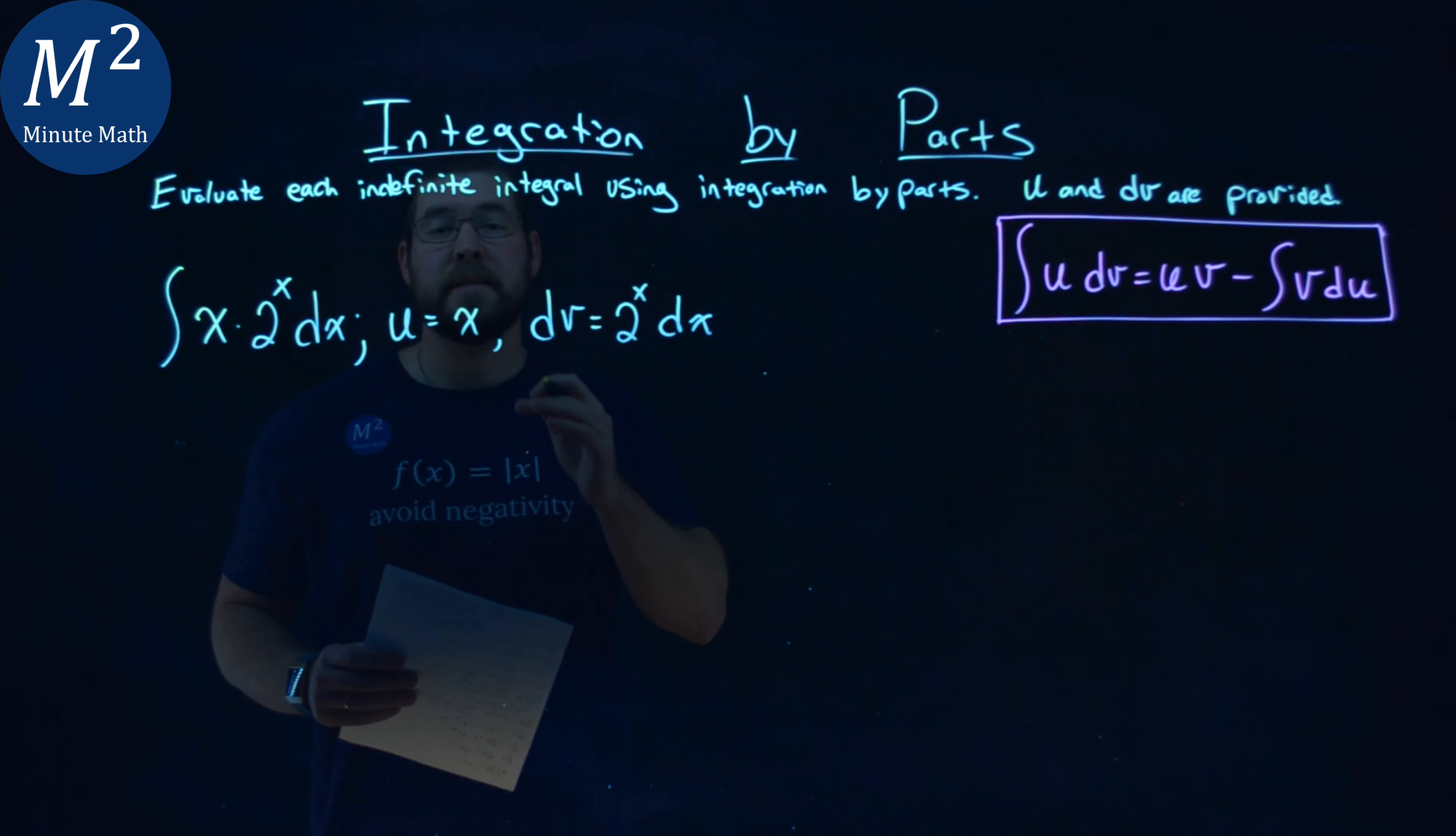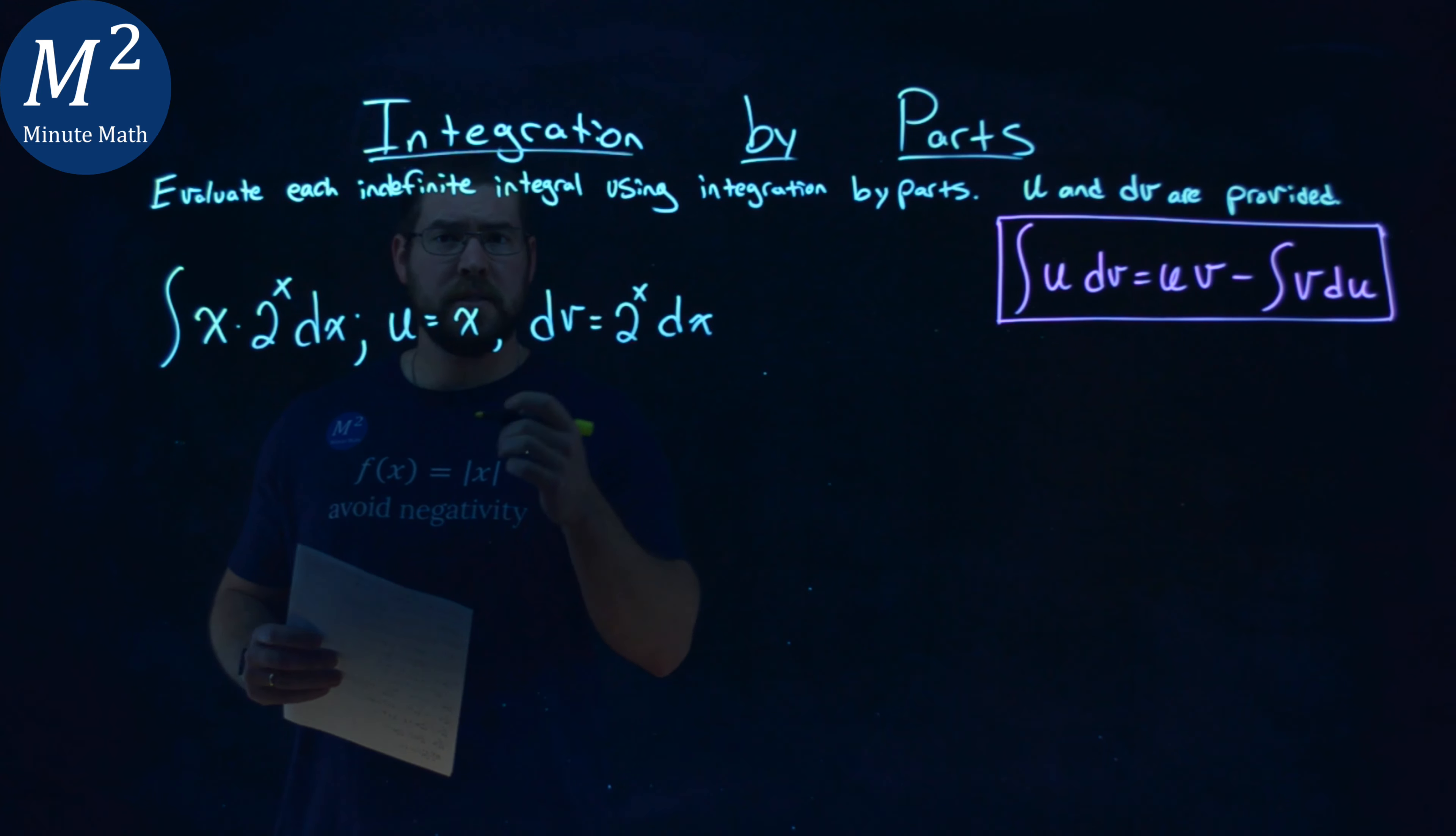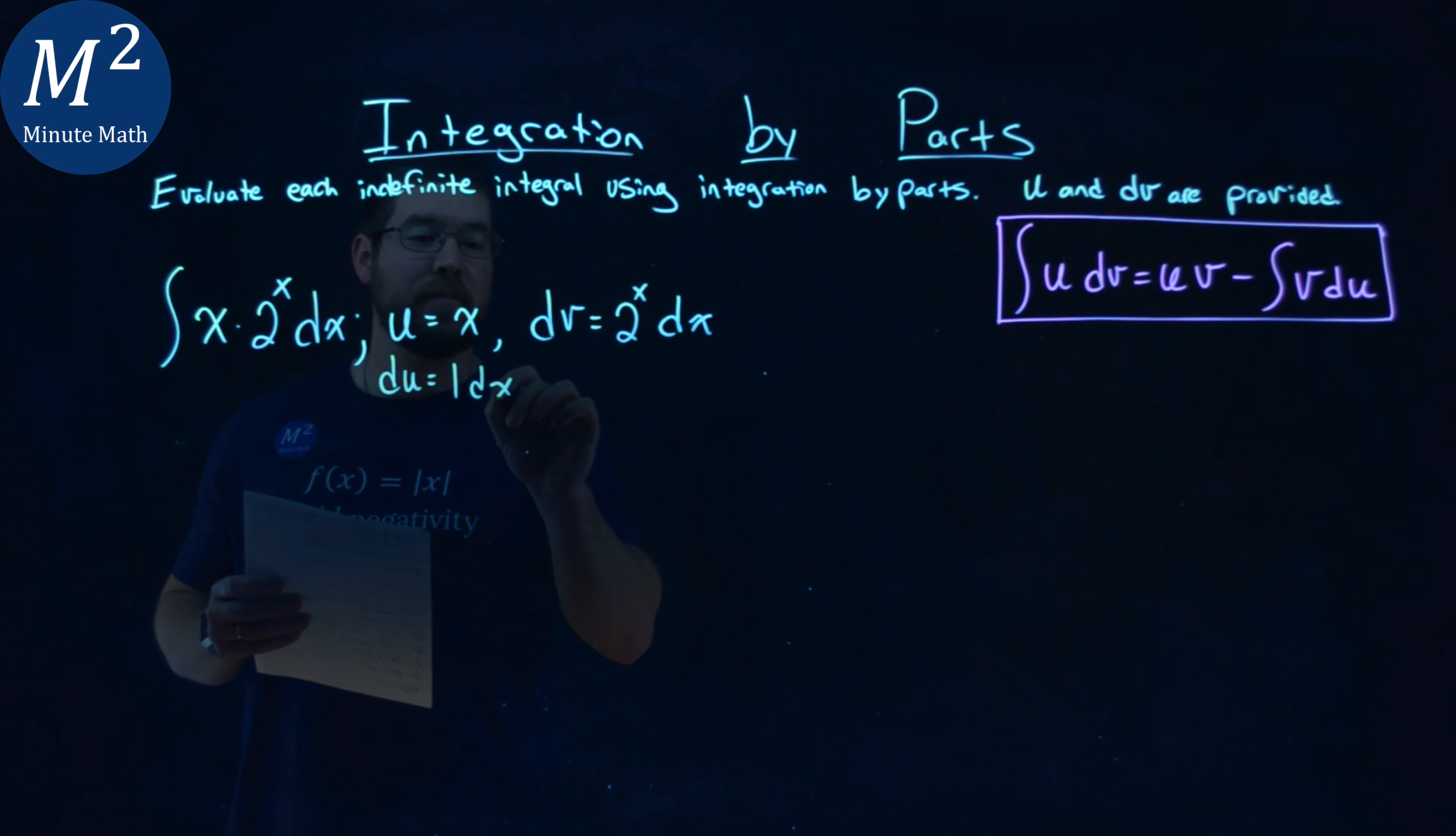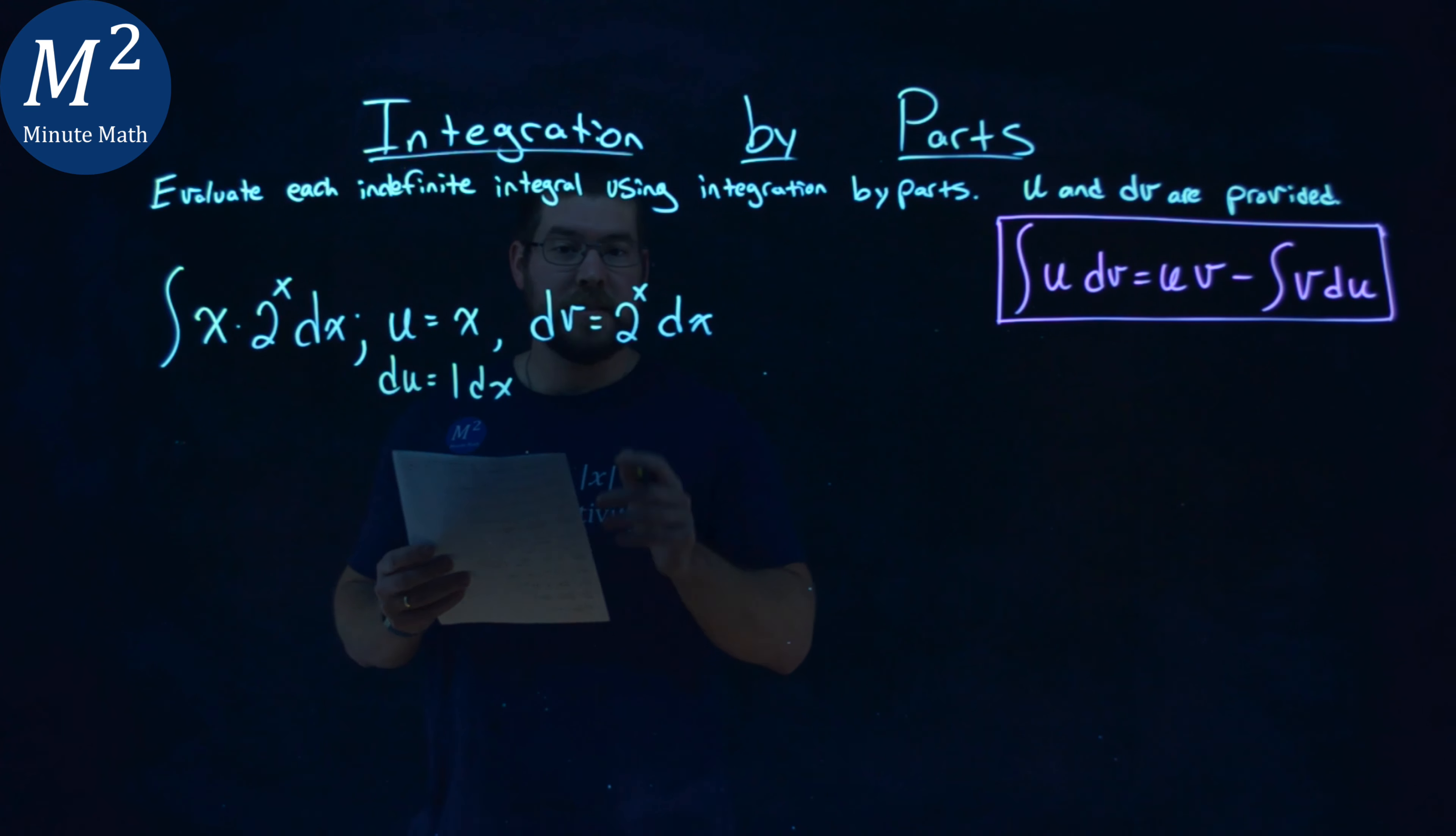Now, we're already given a u and a dv value, so let's go find our du and v value. du, the derivative of x, is just 1 dx. Now, the integral of dv, being v here, the integral of 2 to the x dx is 2 to the x over natural log of 2.